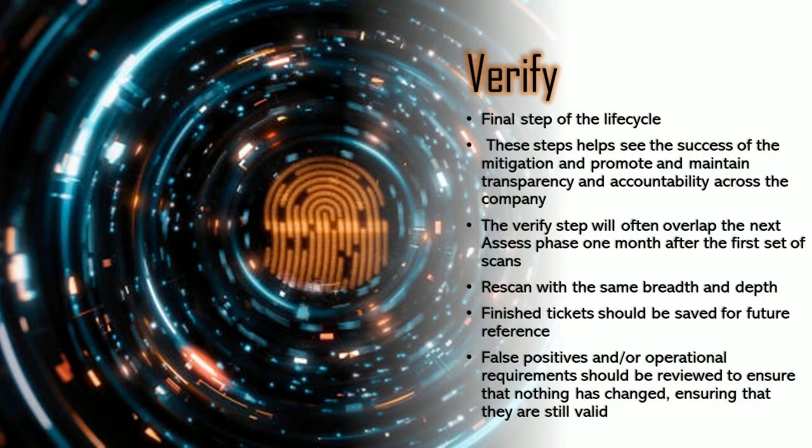Number six and the last step is Verify. This is the final step in the lifecycle process. This step helps see the success of the mitigation and promotes and maintains transparency and accountability across the company. The verify step will often overlap with the next assess phase one month after the first set of scans. You will rescan the same breadth and depth, and this is critical to ensure that the vulnerabilities are no longer present in the environment.